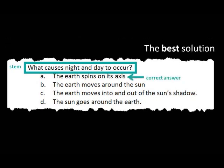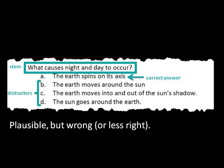The correct answer is the best solution. If you've mastered the objective being tested, you may be able to predict this before you even see it. And the distractors are plausible wrong answers. It's important to understand that the distractors aren't actually there to trick or mislead you. Rather, distractors are there to weed out those who've mastered the objective from those who haven't.